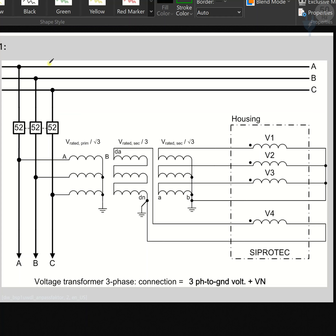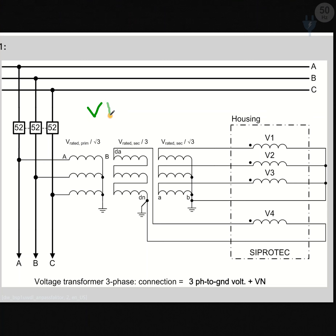Suppose we have a bus bar here, and this is a feeder connected to this bus bar which we want to protect. We have connected the PT, or we call it a VT, to this feeder or transmission line. The primary is connected in star, and the secondary phase windings are also connected in star and connected to the relay. This is our relay — these are the VT connection terminals and this is the neutral connection to the relay.